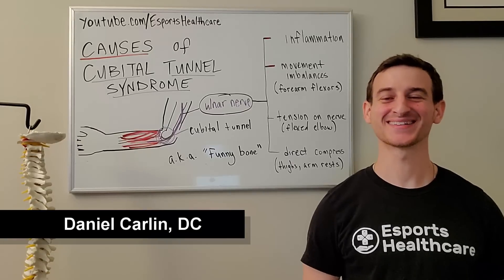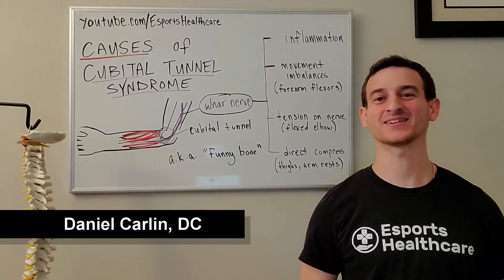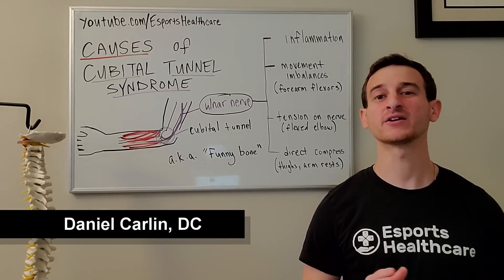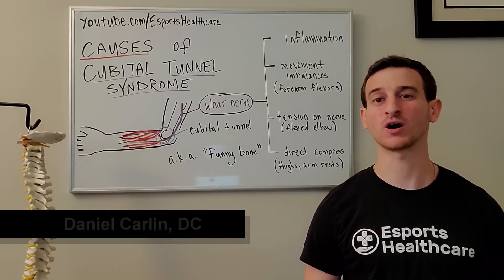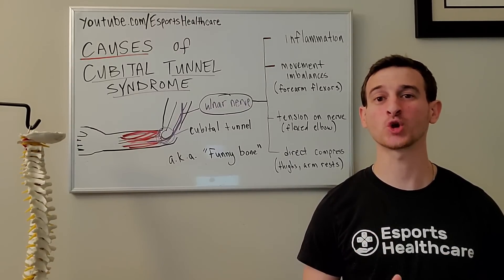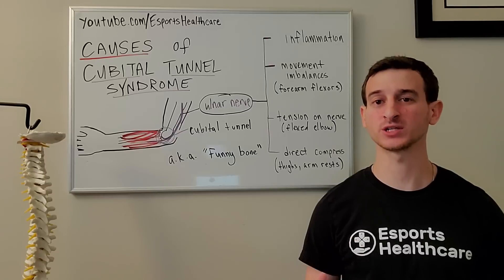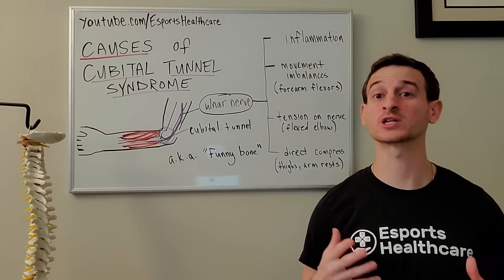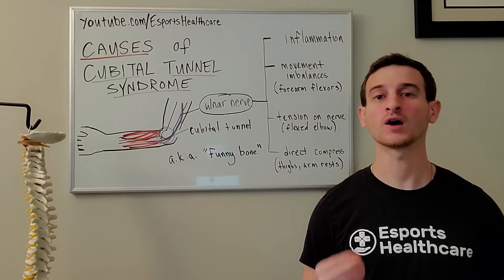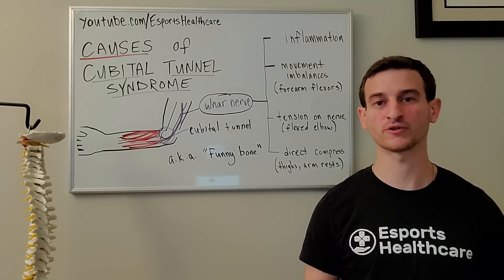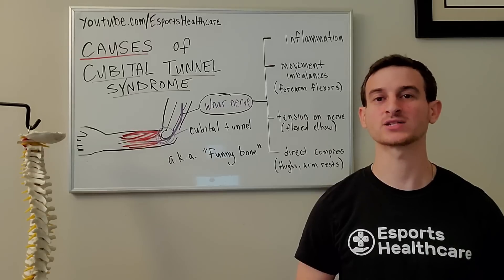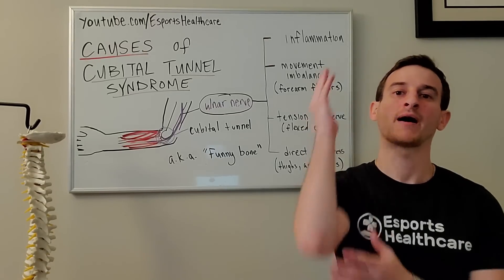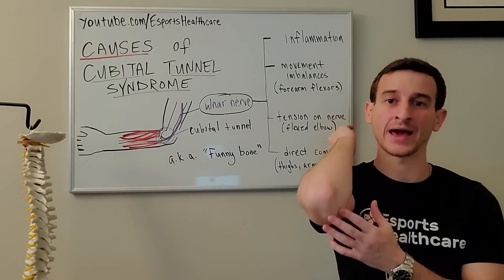Hey everybody, this is Dr. Dan from eSportsHealthcare here to talk about the causes of cubital tunnel syndrome. Cubital tunnel syndrome occurs when there is compression of the ulnar nerve as it passes through the cubital tunnel on the backside of the elbow.